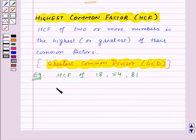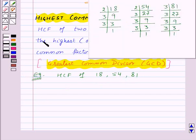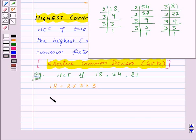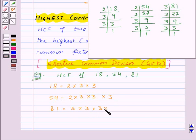First of all, let's find out the prime factorization of 18, 54 and 81. Here we have the prime factorizations: 18 is equal to 2 into 3 into 3, 54 is 2 into 3 into 3 into 3, and the prime factorization of 81 is 3 into 3 into 3 into 3.